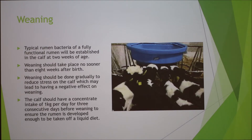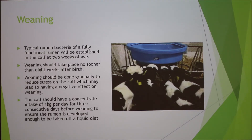The typical rumen bacteria of a fully functional rumen will be established in the calf at about 2 weeks of age. Weaning should take place no sooner than 8 weeks after birth, as the rumen won't be developed enough. Weaning should be done gradually to reduce stress in the calf. The calf should have a concentrate intake of 1 kg per day for 3 consecutive days before weaning to ensure they are sufficiently able to come off the liquid diet.